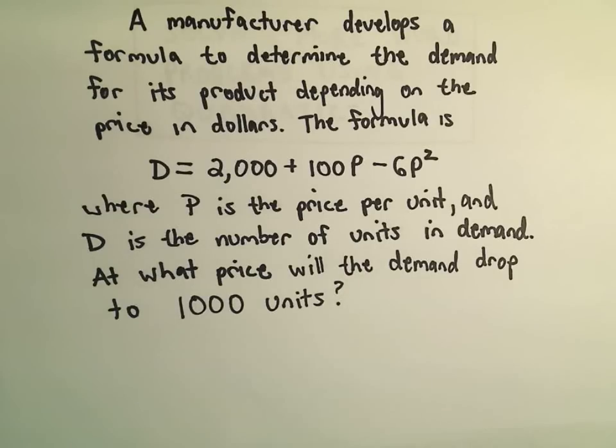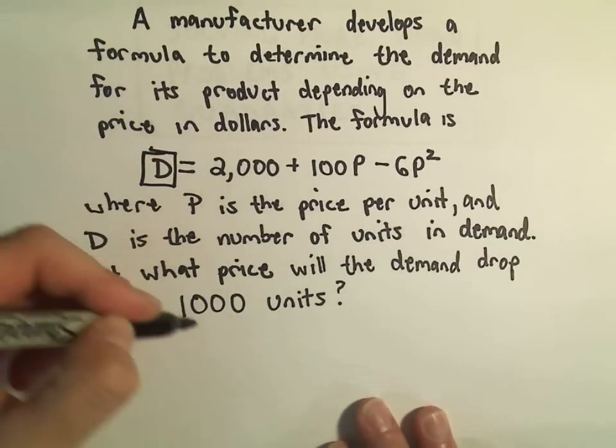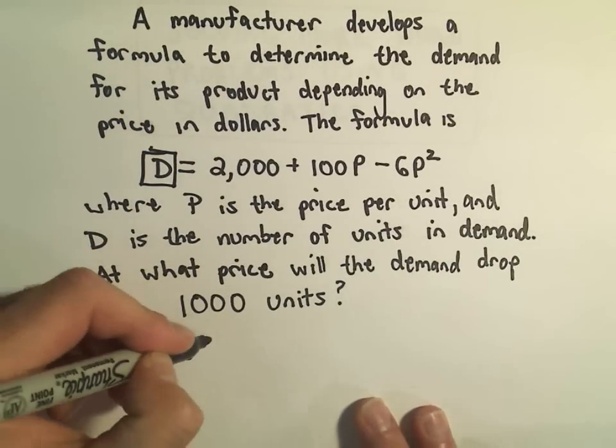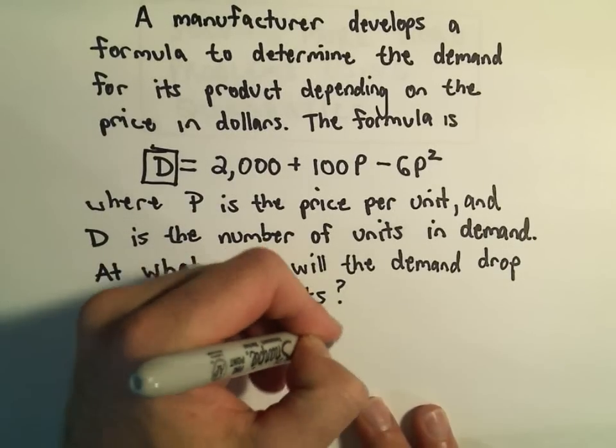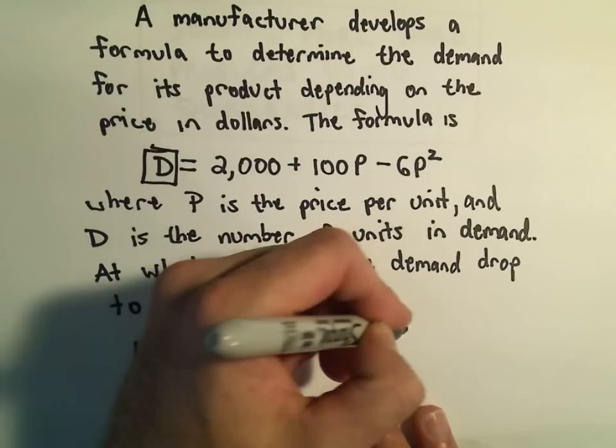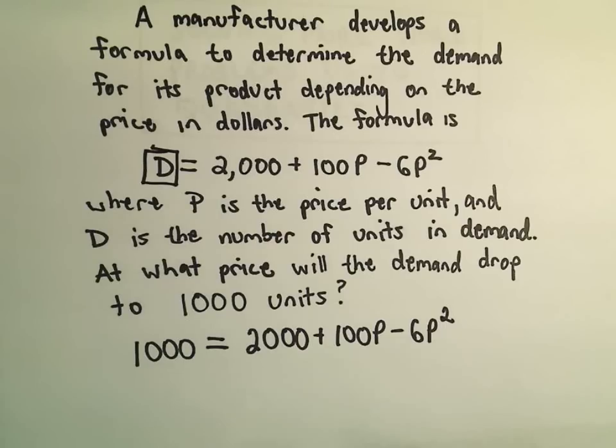So all we have to do in this case is just take our formula. We want the demand to equal 1,000, so I'm just going to plug that on the left side. The right side we'll just leave alone. And now I've got a quadratic equation that I can solve.